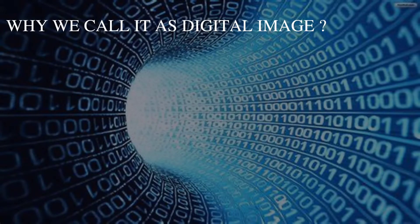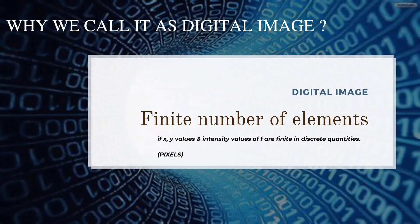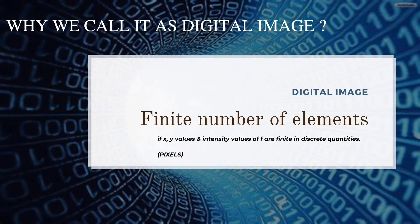Now why do we call the image a digital image? In an image, if x, y, and intensity values are finite in discrete quantities, then the image is called a digital image. A digital image consists of a finite number of elements, each with a particular location and value. These finite elements are called picture elements, image elements, pels, and pixels — but pixel is the most widely used term.